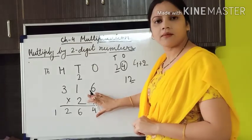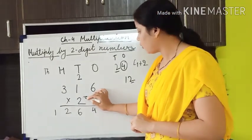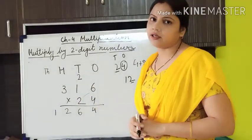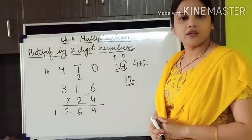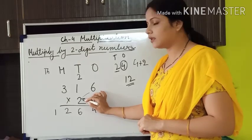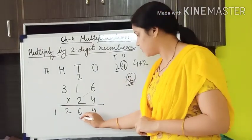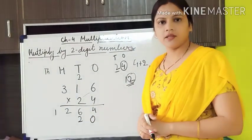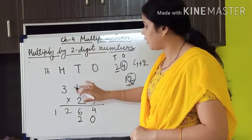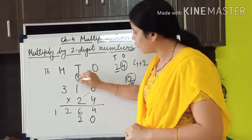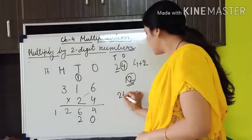Now we multiply by the second number, same way — first the 1s position, then 10s, then 100s. 2 sixes are 12. Since we started from the 10s place, we write 2 at the 10s place and give a 0 at the 1s place, and carry the 1 forward. 2 ones are 2, plus 1 carried is 3, so we write 3 at the next higher place. Now 2 threes are 6, and we write it at the 1000s place since the 100s place is already occupied.